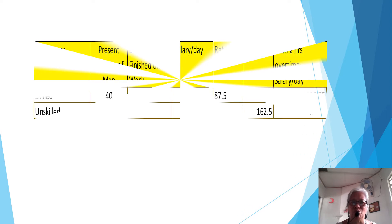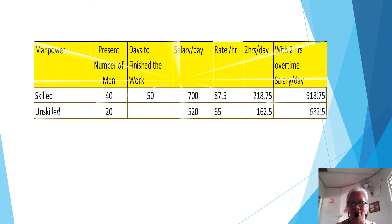Let us understand the given or the present condition. We have 40 skilled men and 20 unskilled men.